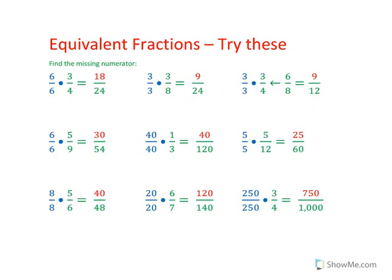Alright, so what we have here. The fraction in green is 3 over 4 equals what over 24? Same procedure: 4 goes into 24 six times. 6 times 3 is 18. 8 goes into 24 three times. 3 times 3 is 9.